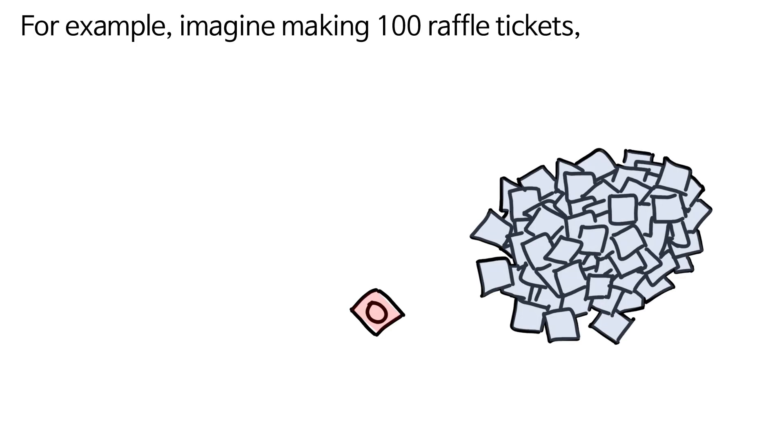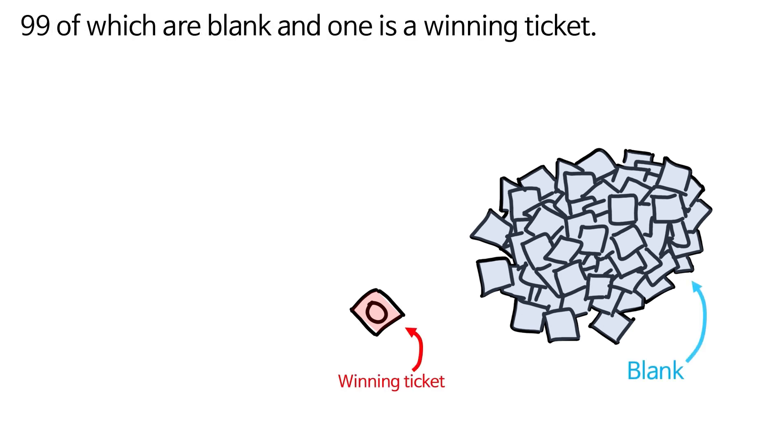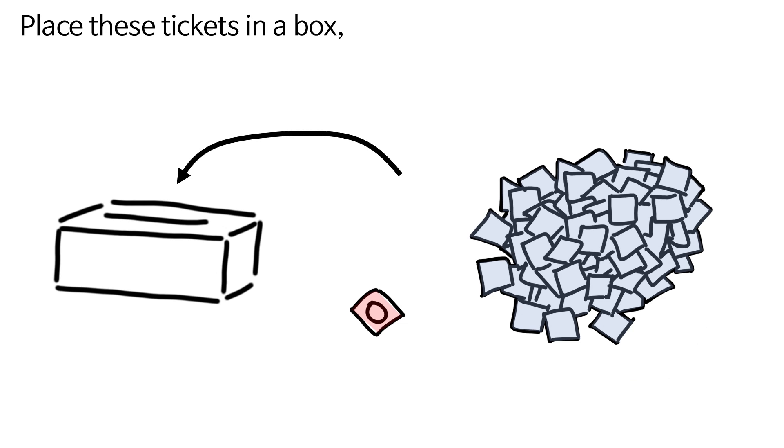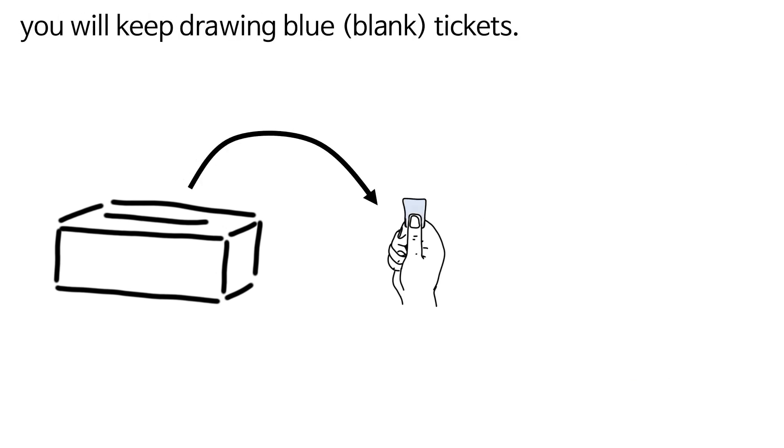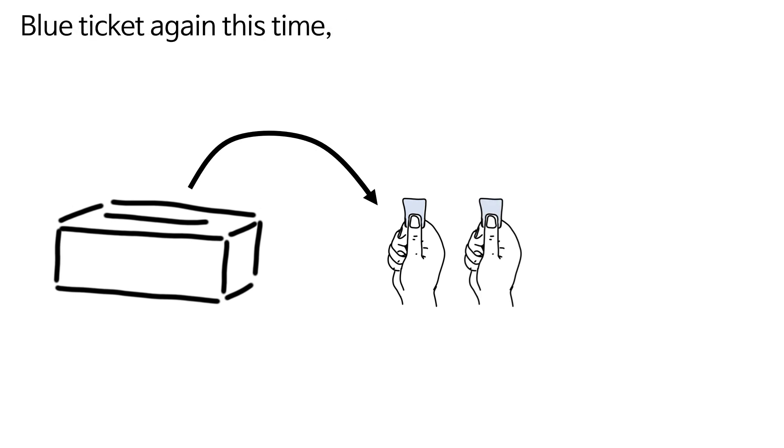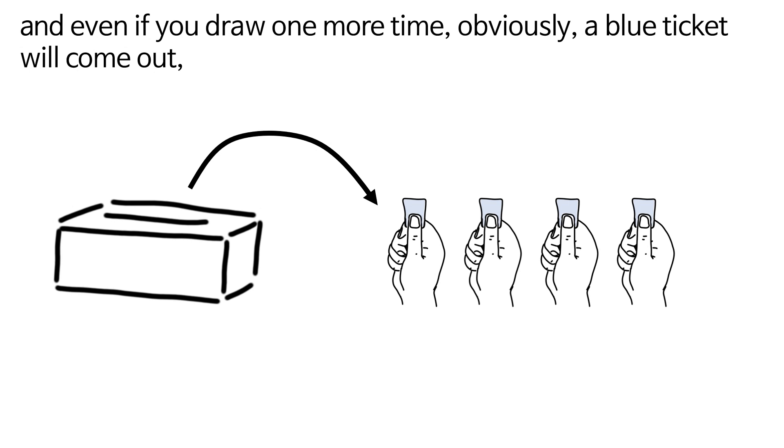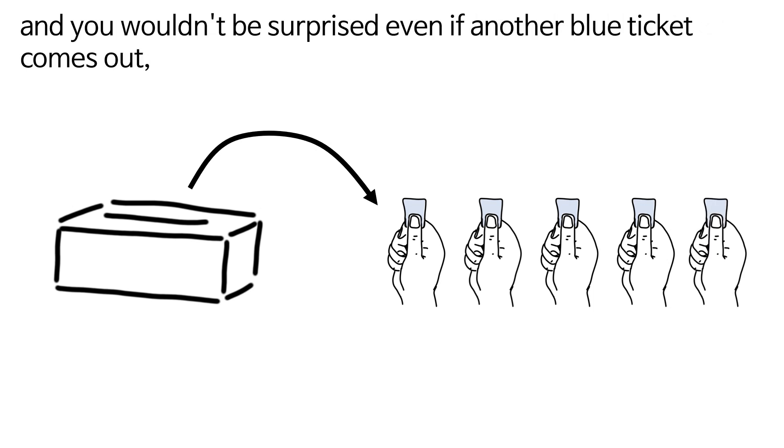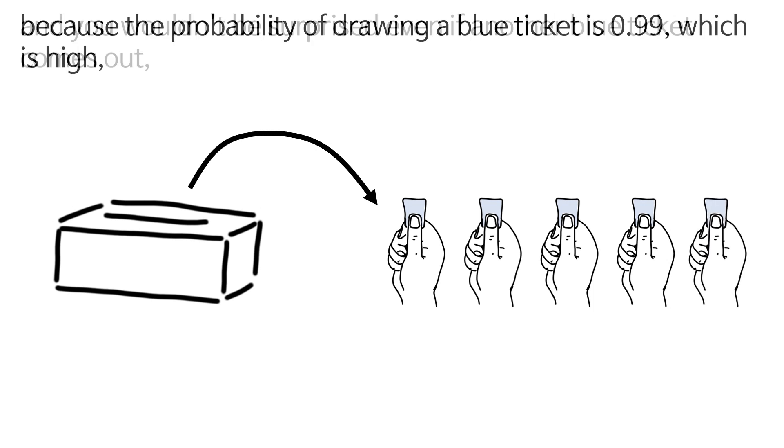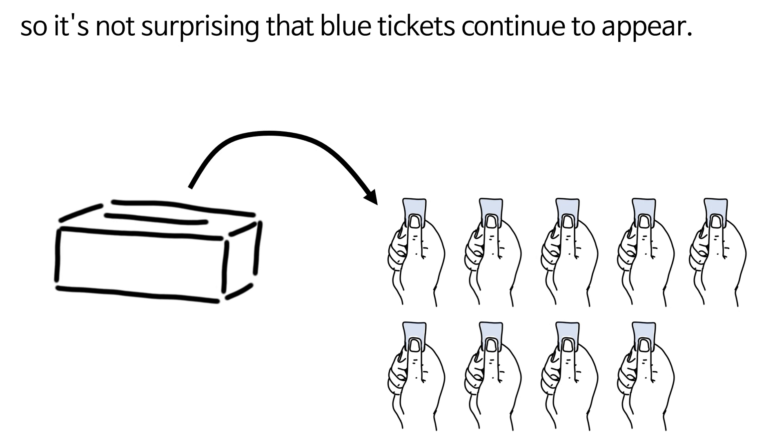Let's consider this scenario. For example, imagine making 100 raffle tickets, 99 of which are blank and one is a winning ticket. Place these tickets in a box and draw them one by one. Then you will keep drawing blue tickets. Blue ticket again this time. Another blue ticket this time. And even if you draw one more time, obviously a blue ticket will come out. And you wouldn't be surprised even if another blue ticket comes out. Because the probability of drawing a blue ticket is 0.99, which is high. So it's not surprising that blue tickets continue to appear.